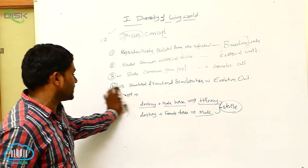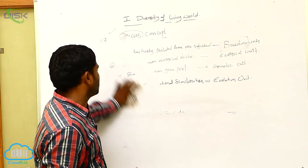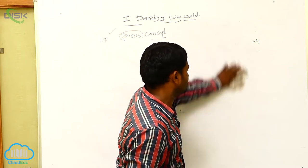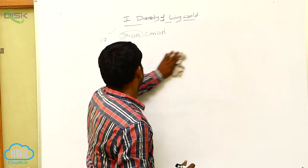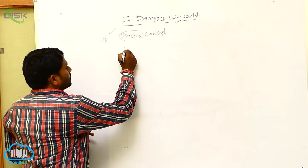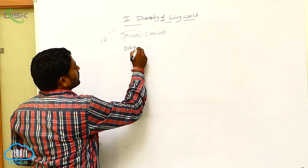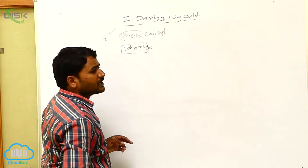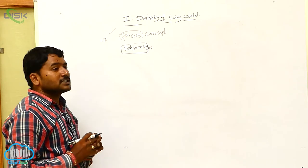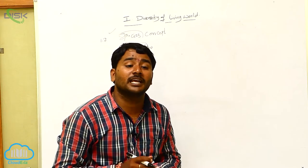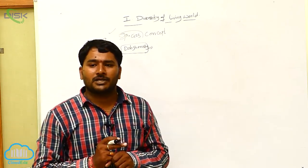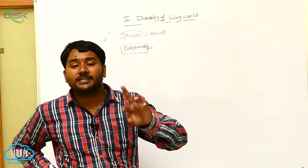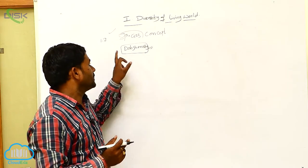There is one more definition related to the species, given by scientist Dobzhansky. As per Dobzhansky, species is nothing but a Mendelian population. The Mendelian population is known as species — that was the definition given by Dobzhansky.